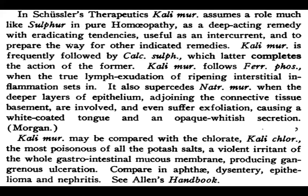In Schussler therapeutics, Kali Muri plays a role much like Sulphur in pure homeopathy — as a deep-acting remedy with eradicating tendencies, useful as an intercurrent remedy to prepare the way for other indicated remedies. In Schussler's 12 tissue remedies, whenever a remedy is not acting, Kali Muri can be used like Sulphur on the same indication. Kali Muri is frequently followed by Calcarea Sulph, which completes the action of the former.